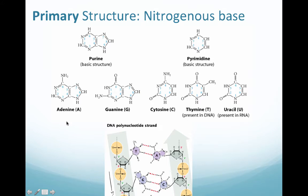The nitrogenous bases can be further categorized into either purines or pyrimidines. Our purines are going to be adenine and guanine, whereas our pyrimidines are going to be cytosine, thymine, and uracil. Uracil is important because it is actually going to be present in RNA material but not DNA material. So if you look at a set of sequences and you see a U instead of a T, that means you're dealing with RNA and not DNA.